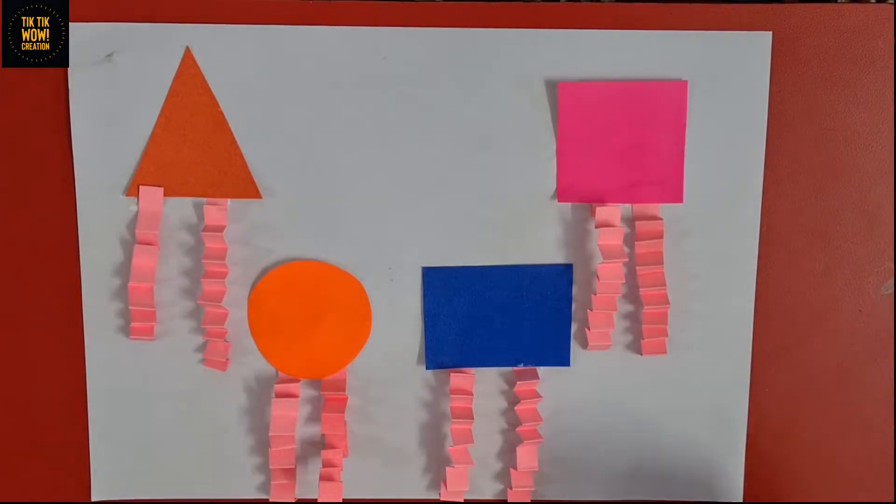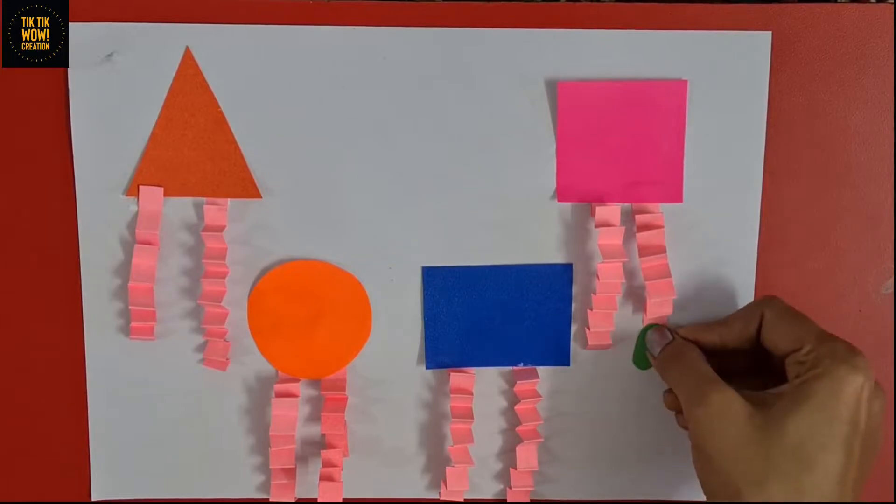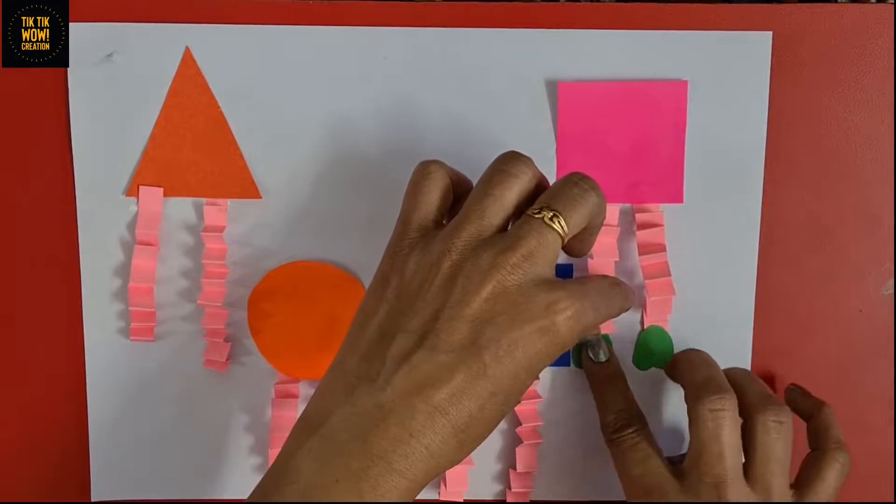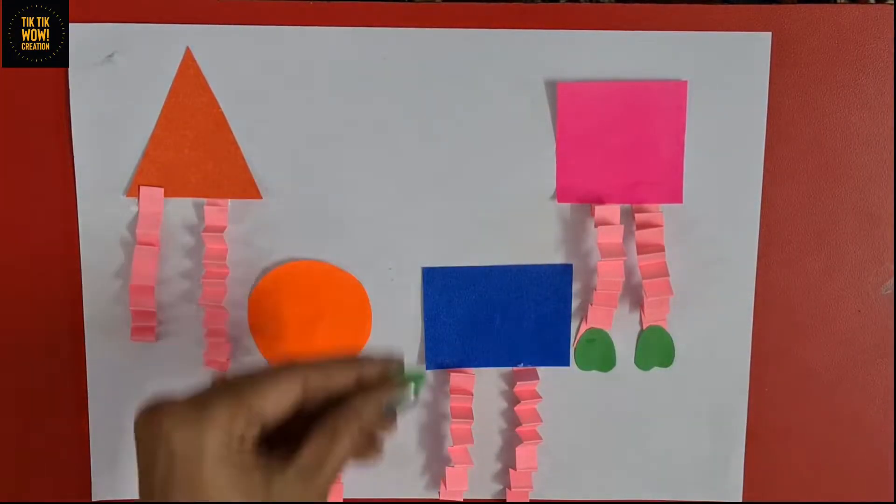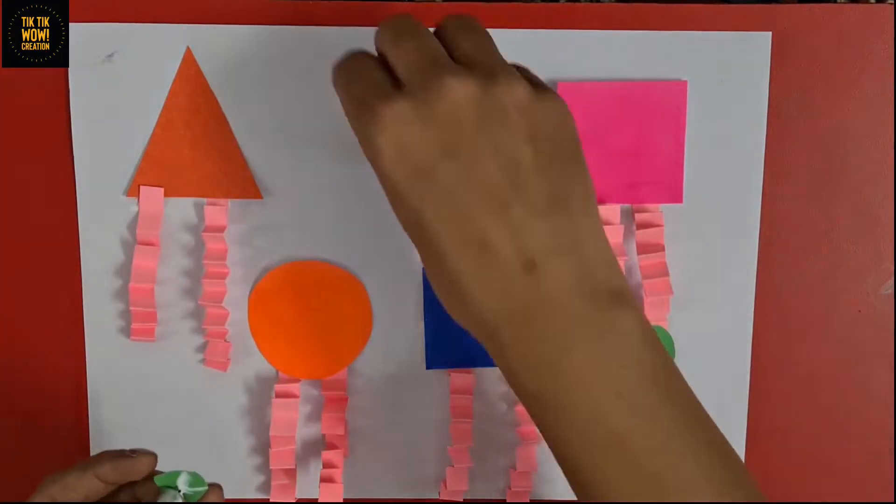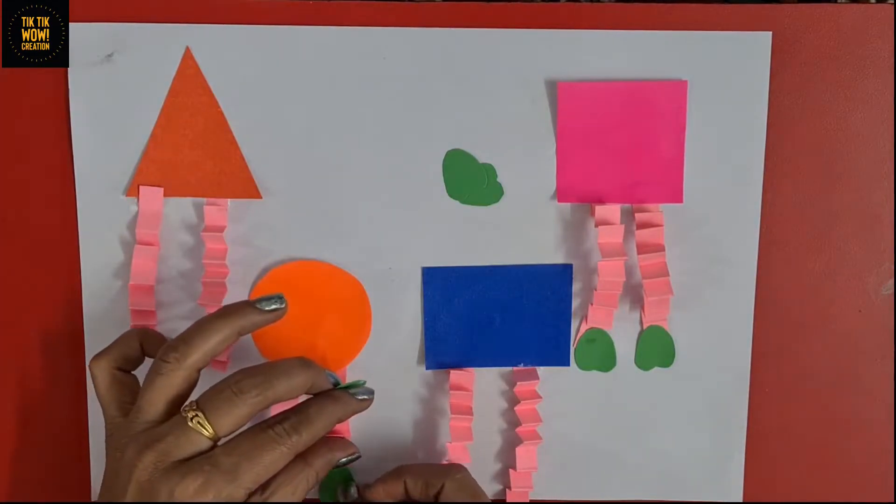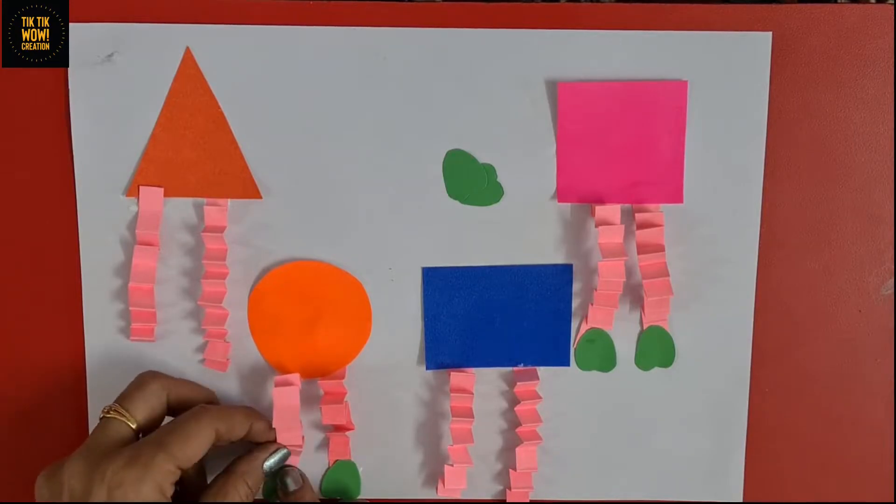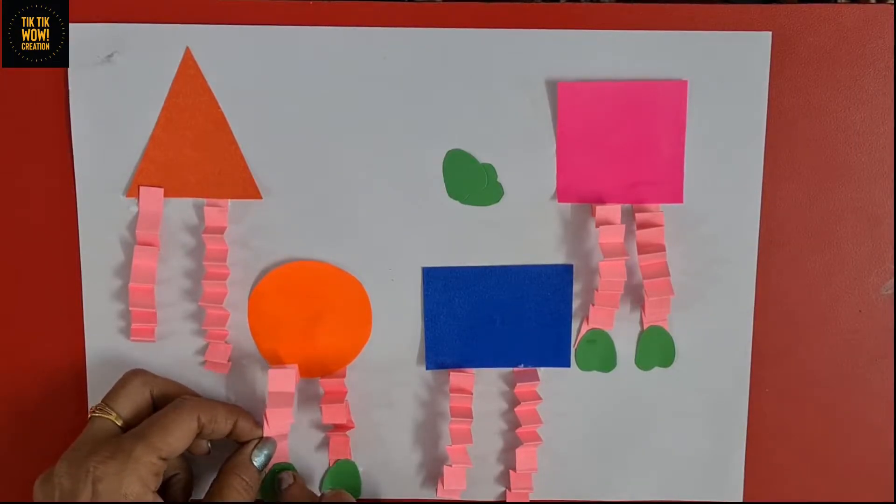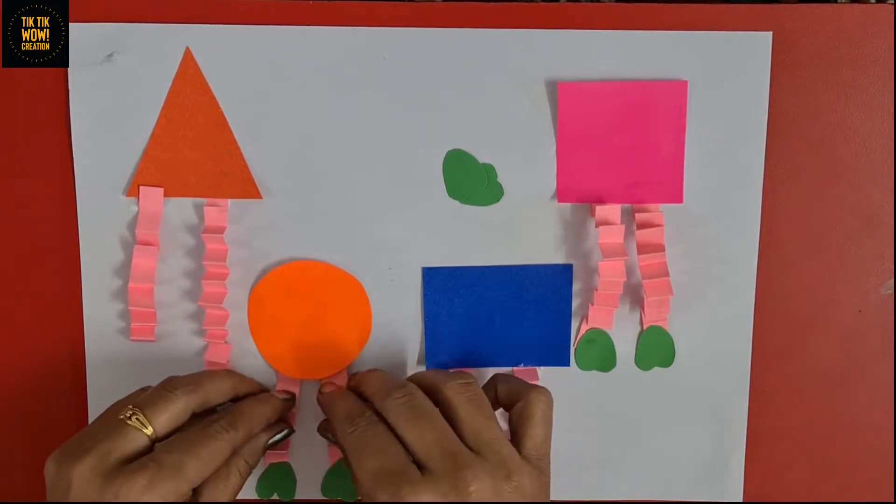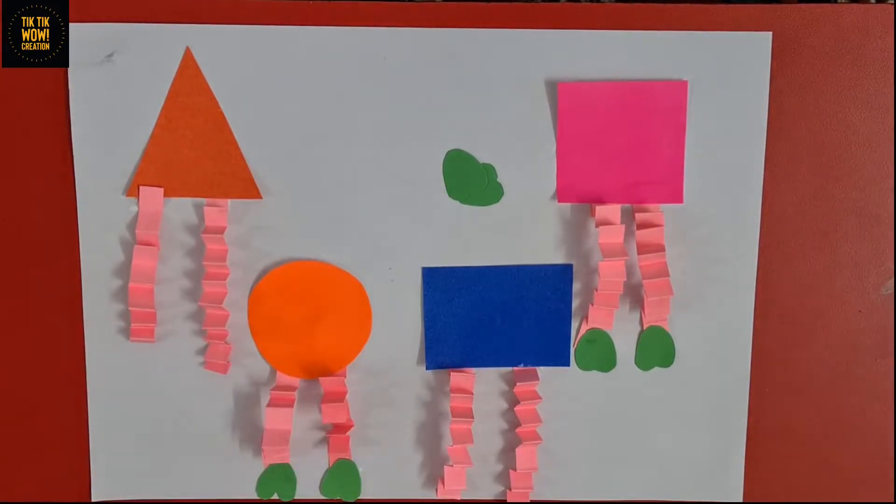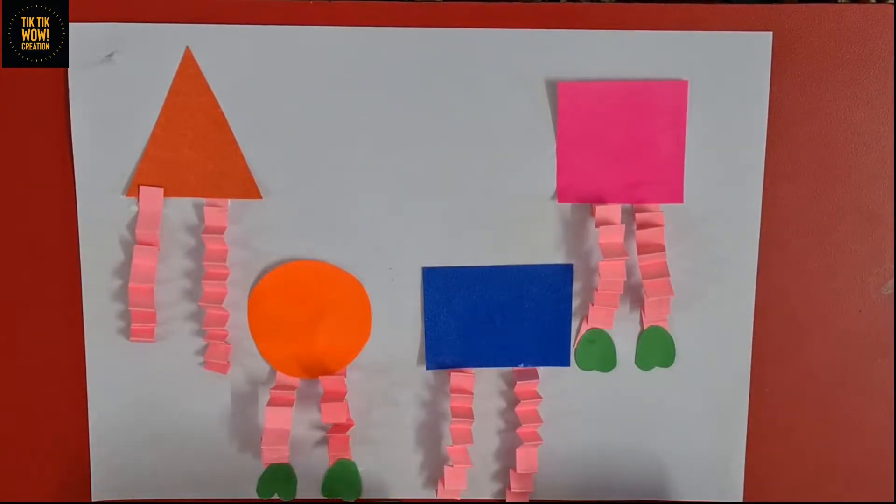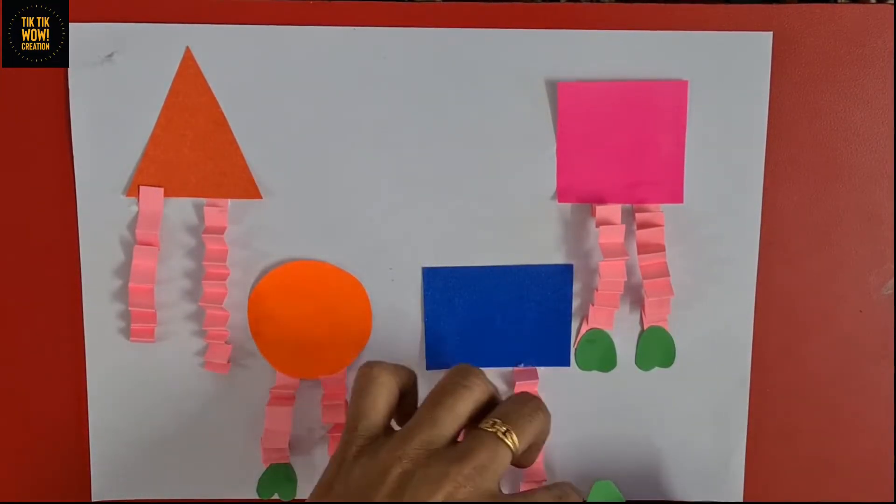Now we will paste some small heart-shaped cutouts with strips to secure their legs. It will give a 3D look to the picture.